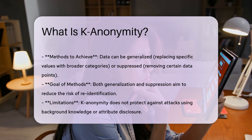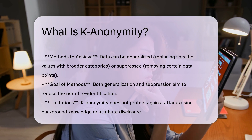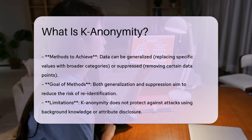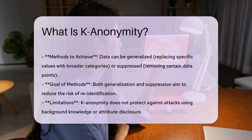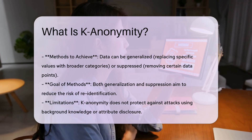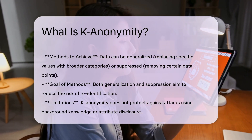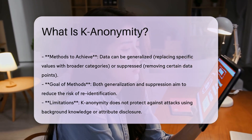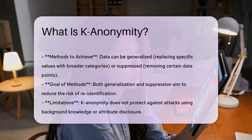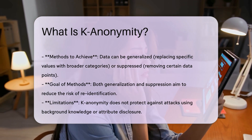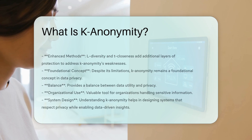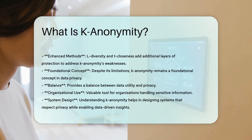However, K-anonymity has limitations. It does not protect against attacks using background knowledge or attribute disclosure. Enhanced methods like L-diversity and T-closeness address some of these weaknesses by adding additional layers of protection.